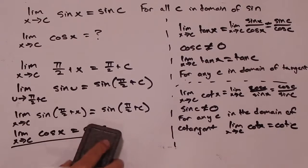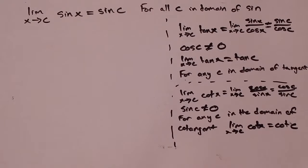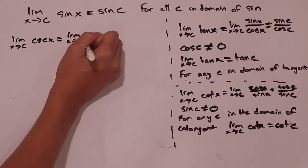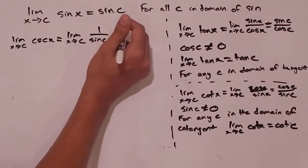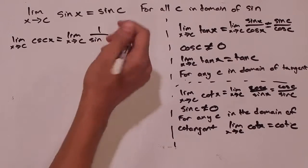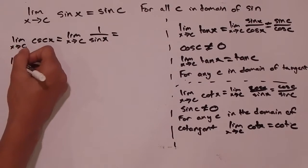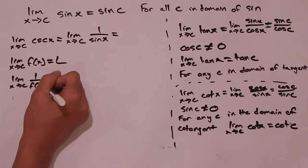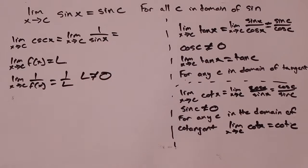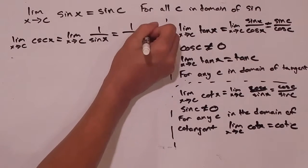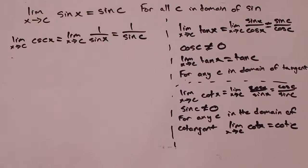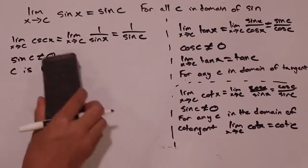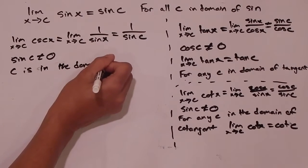Now let's look at our last two. First is cosecant: the limit as x goes to c of cosecant of x, which is the limit as x goes to c of 1 over sine of x. From our properties of limits, if the limit as x goes to c of f(x) equals L, then the limit as x goes to c of 1 over f(x) is 1 over L, provided L doesn't equal 0. So the limit as x goes to c of 1 over sine of x is 1 over sine of c, provided that sine of c does not equal 0, or that c is in the domain of cosecant.